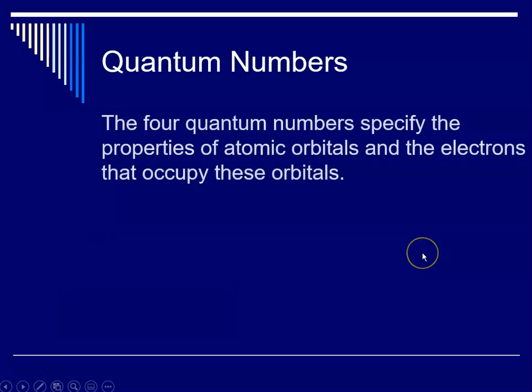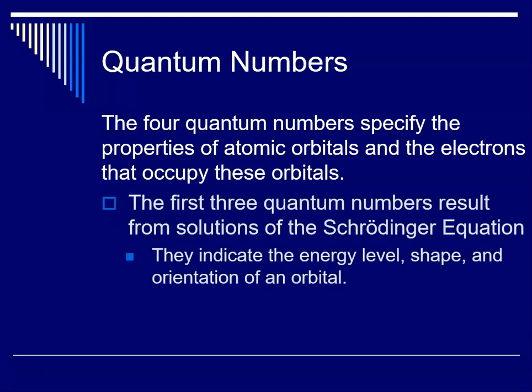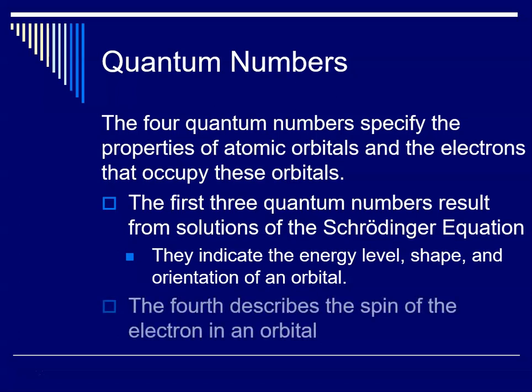The four quantum numbers specify the properties of atomic orbitals and the electrons that occupy these orbitals. The first three quantum numbers result from solutions to the Schrodinger equation. They indicate the energy level, the shape, and orientation of an orbital. And when I say orientation, I mean in space, using an XYZ axis. The fourth quantum number describes the spin state of an electron in an orbital.